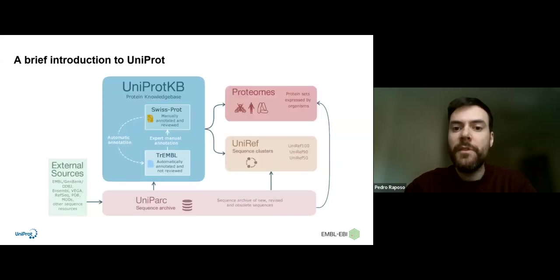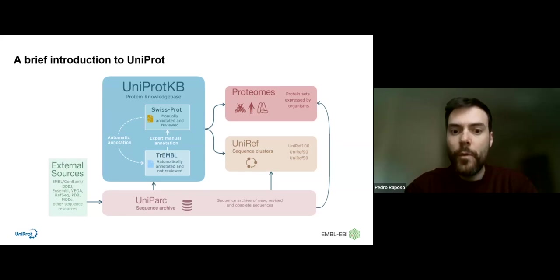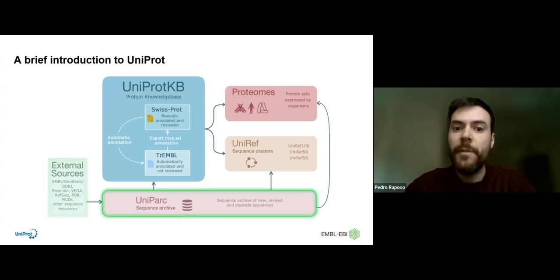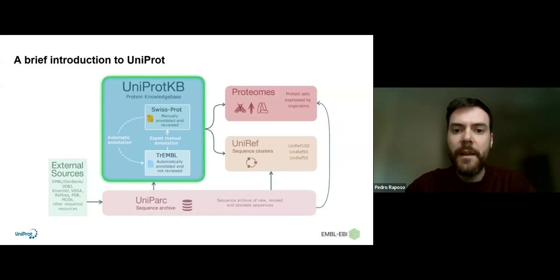Just a brief introduction to the different UniProt resources. We start by importing information from external genomic sources, such as ENA and GenBank. This information goes into UniParc, our archive resource for protein sequences. Then we transform those sequences into protein accessions in the UniProt Knowledge Base, or UniProtKB.